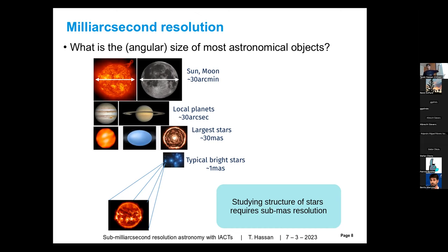Apart from local planets, already the largest stars are measured in milli-arcseconds — tens of milli-arcseconds. Most of the stars you see with your eyes are already sub-milli-arcsecond or milli-arcsecond scale. Some will be larger, but typical bright stars are milli-arcseconds and obviously below.